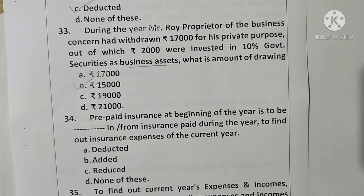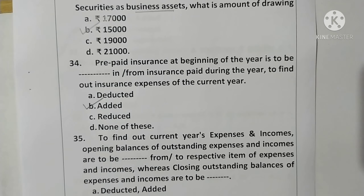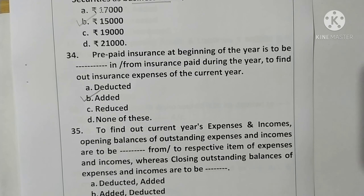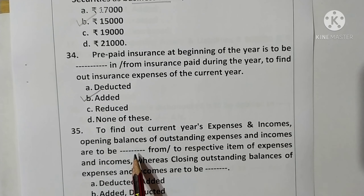Question 34: Prepaid insurance at the beginning of the year is to be added to insurance paid during the year to find the insurance expenses of the current year. Option B is correct. Question 35: To find the current year's expenses and incomes, opening balances of outstanding expenses and incomes are to be deducted, whereas closing outstanding balances are to be added. Option A is correct.